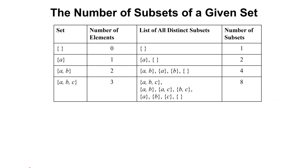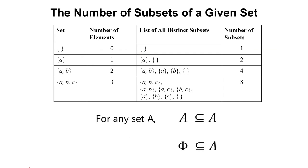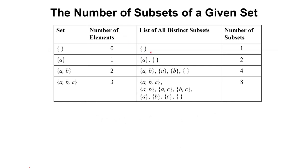Let's look at the connection between the number of elements of a set and the number of subsets of that set. Starting with the empty set: the number of elements is 0, so the number of distinct subsets is just 1. The subset of an empty set is just itself — itself and the empty set are the same, so there is only one subset.